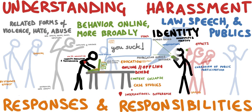On 26 March 1999, the Melissa worm infected a document on a victim's computer, then automatically sent that document and a copy of the virus via email to other people. In February 2000, an individual going by the alias of MafiaBoy began a series of denial of service attacks against high-profile websites, including Yahoo, Dell, Inc., eBay, and CNN. About 50 computers at Stanford University, and also computers at the University of California at Santa Barbara, were amongst the zombie computers sending pings in DDoS attacks. On 3 August 2000, Canadian federal prosecutors charged MafiaBoy with 54 counts of illegal access to computers, plus a total of 10 counts of mischief to data for his attacks.